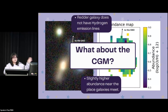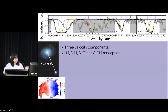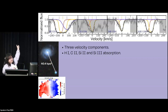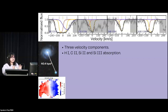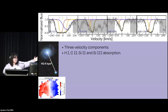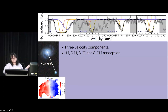Now about the CGM — that's in the title of the talk. For the face-on galaxy, the impact parameter — the projected distance between the center of the galaxy and the quasar line of sight — is 40 kiloparsecs. Here's the velocity map for reference. In the spectra, we can see the absorption lines that we observe. We use Voigt profiles to model this absorption and we find three velocity components. We also found absorption from neutral hydrogen, C II, Si II, and Si III.